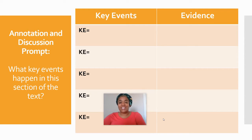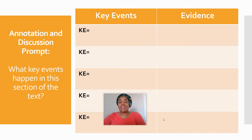Scholars, you are going to create your T-chart. Your T-chart today will have a total of five boxes. Your T-chart on the left will show all of the key events, and your T-chart on the right will show your evidence to support those key events. I'm going to give you a few seconds to go ahead and create your T-chart.